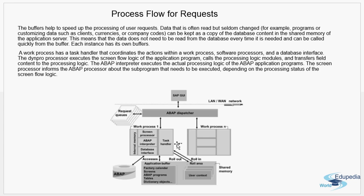The screen processor is responsible for the screen flow logic of the application program — for example, when executing a program, it manages which screen is presented and transitions to the next screen. The ABAP interpreter executes the actual processing logic of the ABAP application programs. The screen processor informs the ABAP interpreter about the sub-program that needs to be executed depending on the processing state of the screen flow logic. These two components communicate: the screen processor tells the ABAP interpreter what needs to be executed from that screen.